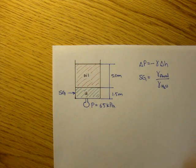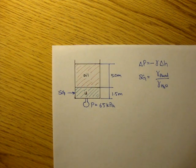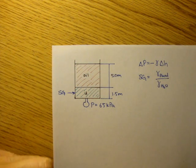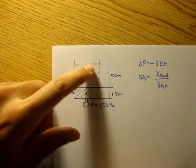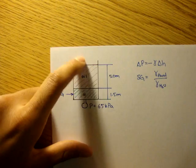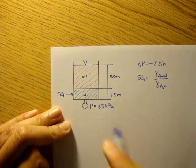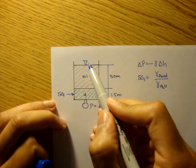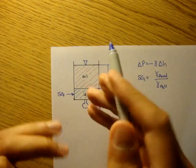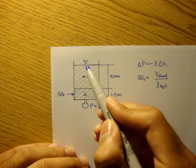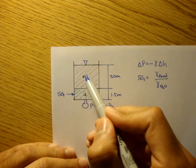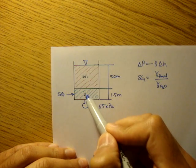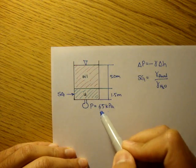The way to solve these problems is to go step by step. You have air floating on top at zero gauge pressure or one atmospheric pressure. So the pressure here is just zero. You go down through oil, then change from oil to unknown liquid. At the very bottom, the pressure is 65 kilopascals.